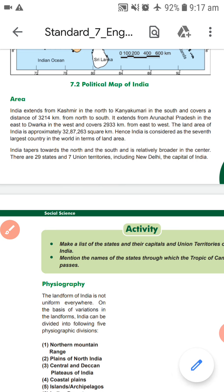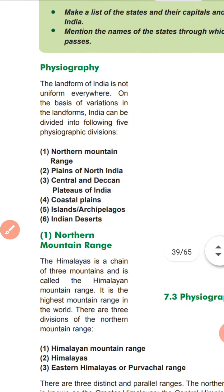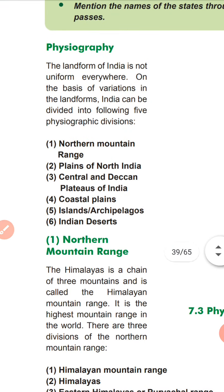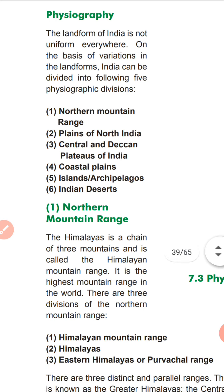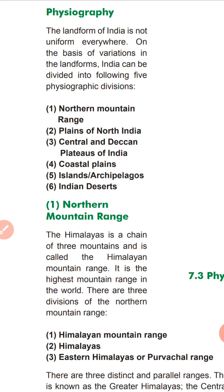Now, the landform of India is not uniform everywhere. On the basis of variations in landforms, India can be divided into five physiographic divisions: Northern Mountain Range, Plains of North India, Central and Deccan Plateaus, Coastal Plains, Islands and Archipelagos, and the Indian Desert.